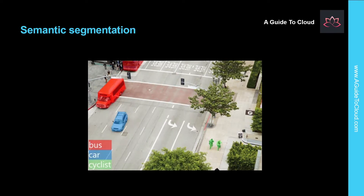Semantic segmentation is an advanced machine learning technique in which individual pixels in the image are classified according to the object to which they belong. For example, a traffic monitoring solution might overlay traffic images with mask layers to highlight different vehicles using specific colors.